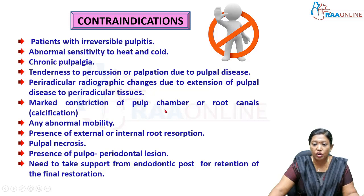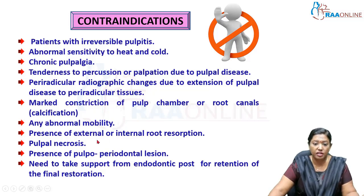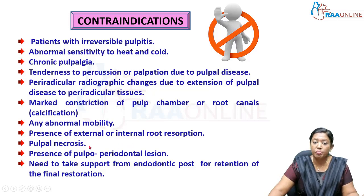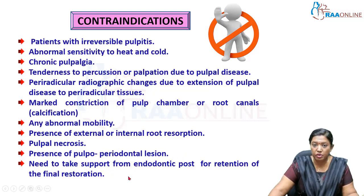Additional contraindications include marked constriction of the pulp chamber or root canals — calcifications or obliterations seen on the intraoral periapical radiograph make the procedure impossible. Abnormal mobility, including grade 1 or grade 2 mobility, also contraindicates pulpotomy. The presence of external and internal root resorption is a contraindication. Definitive pulpal necrosis requires conventional endodontic therapy or extraction. The presence of an endo-perio lesion also requires conventional endodontic therapy — do not attempt pulpotomy in these cases.